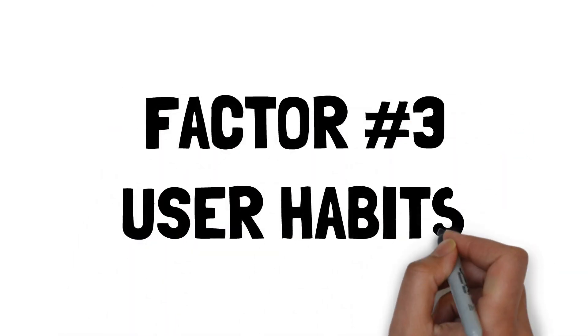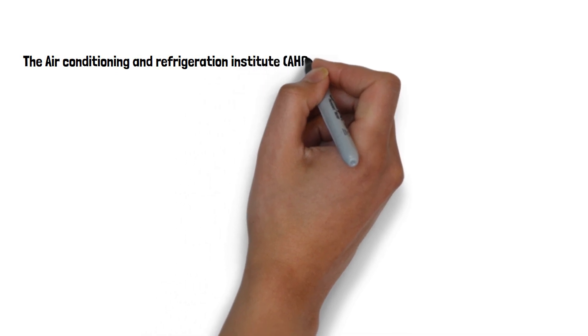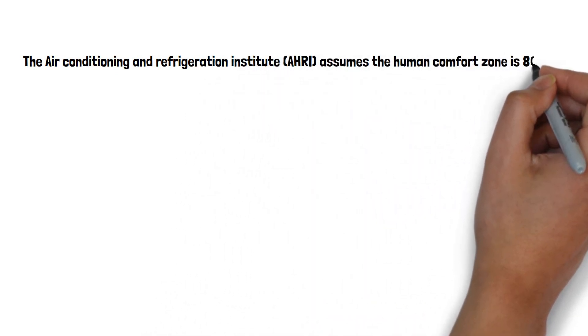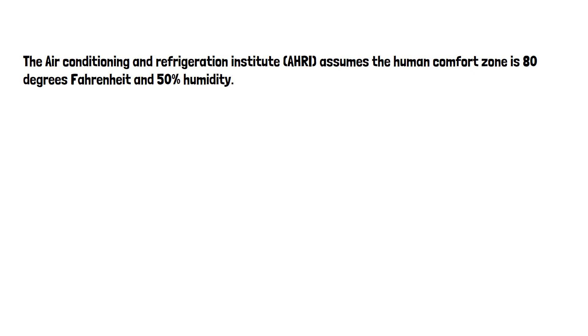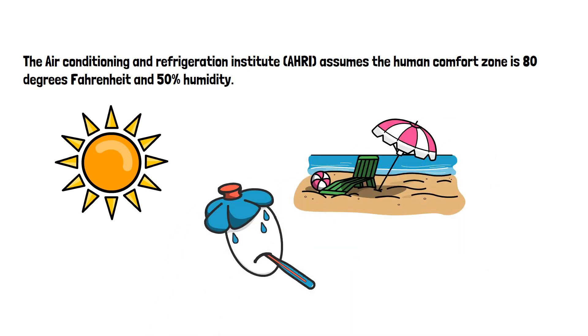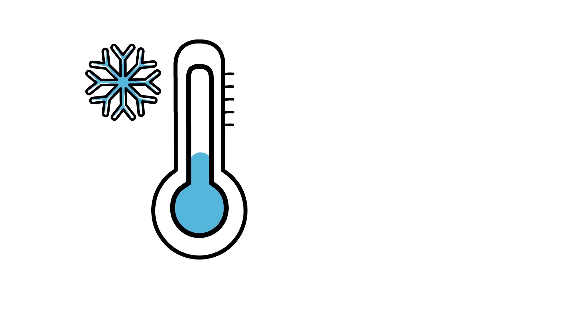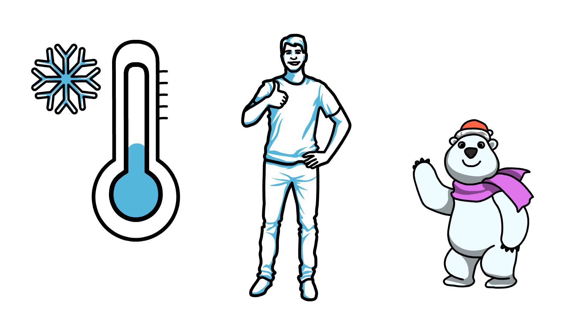Factor number three, user habits. Temperature preference is very important. The Air Conditioning and Refrigeration Institute AHRI assumes the human comfort zone is at 80 degrees Fahrenheit and 50% humidity. Most online BTU calculations are following this standard. The fact is, we know that a lot of people are not comfortable at 80 degrees. Some customers prefer the temperature to be below the 70s. Some people even prefer the low 60s.